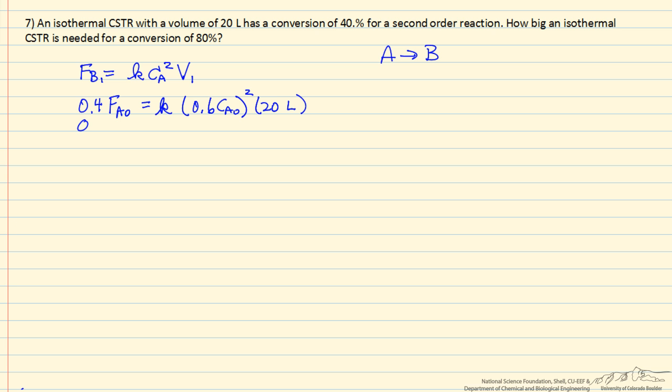Well this left side, we can write this as volumetric flow rate times CA0, and the right side is 0.36 CA0 squared times 20 times the rate constant. We can see that CA0 cancels, and we can solve for the volumetric flow rate divided by the rate constant and CA0, and that ratio turns out to be 1.8. Of course it's going to be the same ratio in the new reactor. We're keeping the feed the same, so the volumetric flow rate and the concentration are the same. Temperature is the same, so the rate constant is the same.